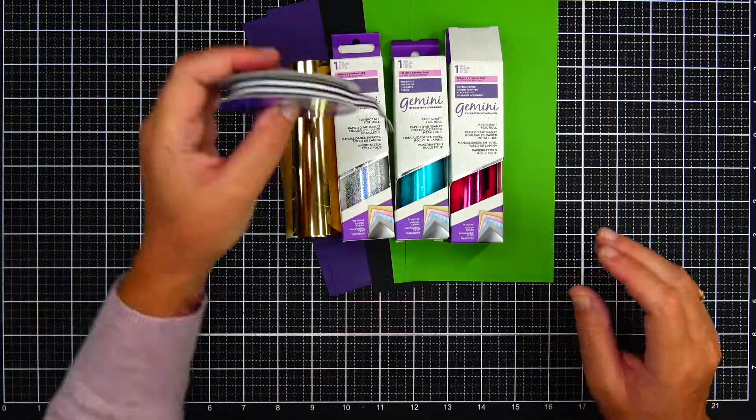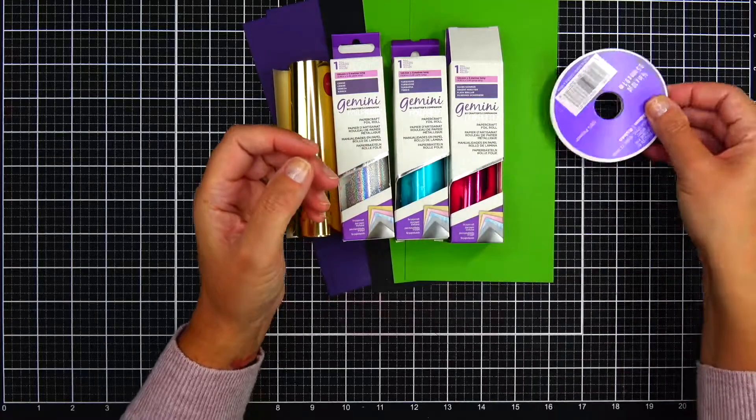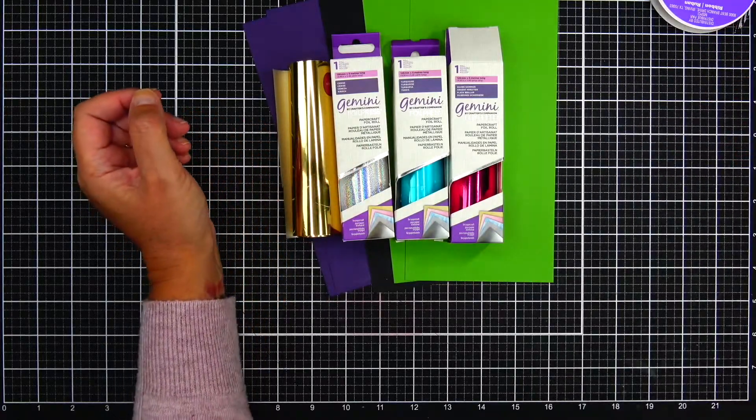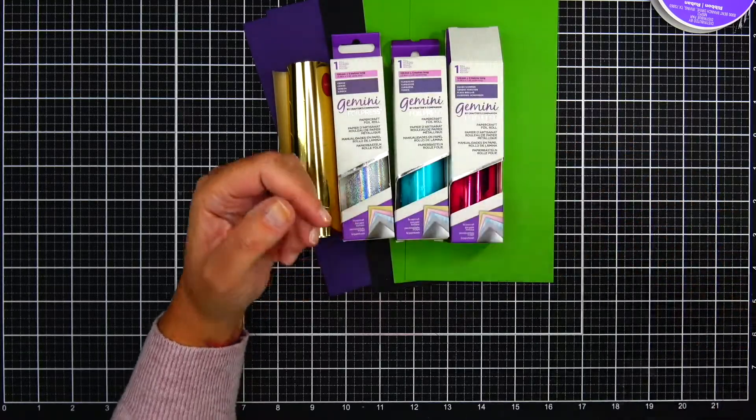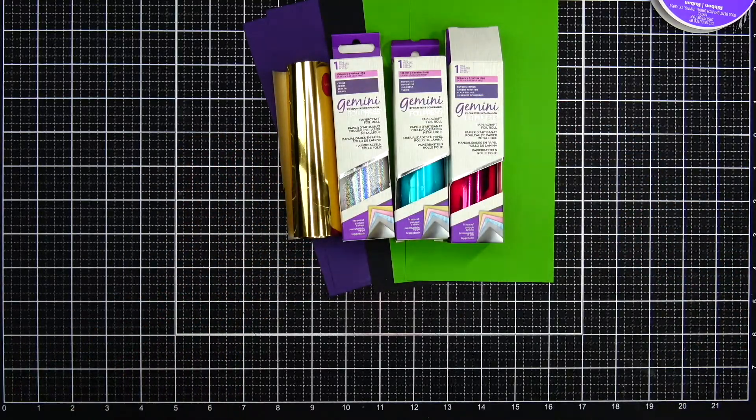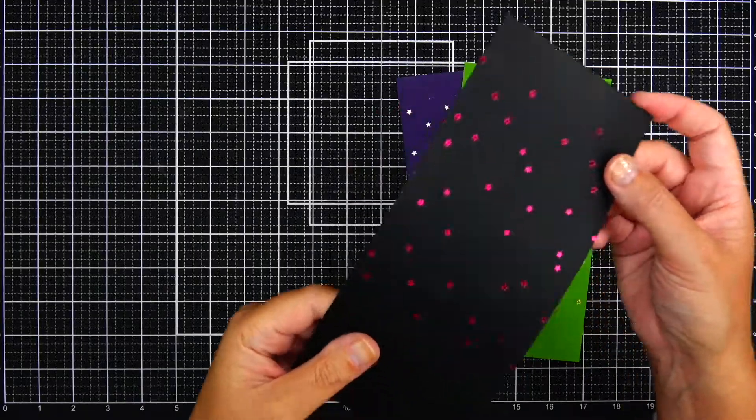I also have a selection of foil for my Gemini foil press, which I'll be using to make the stars. To put the stars onto the cardstock, I have black and white ribbon that I bought at Michaels last year.